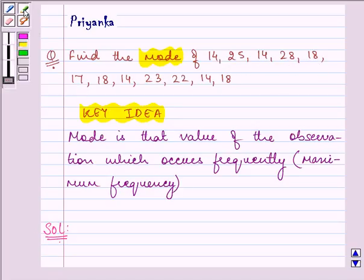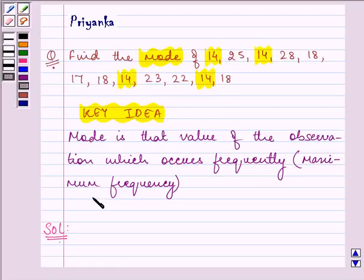So the observation 14 is an observation that is frequently appearing in the data. That means it has the maximum frequency. Right. So what will be our answer? The answer will be that mode is equal to 14.